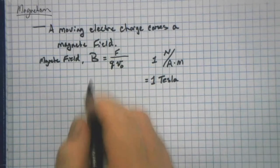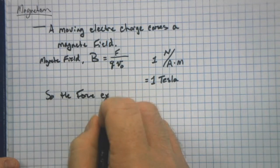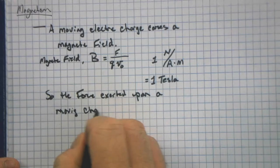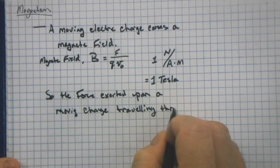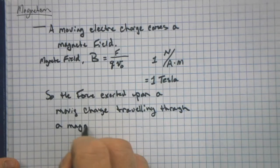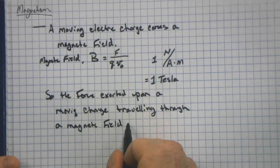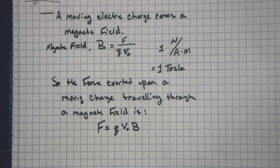So another way of writing this is that the force exerted upon a moving charge traveling through a magnetic field is QVB. The charge times its speed times the strength of the magnetic field.